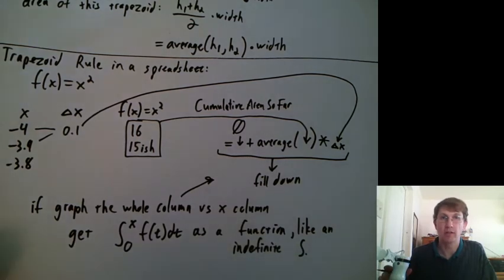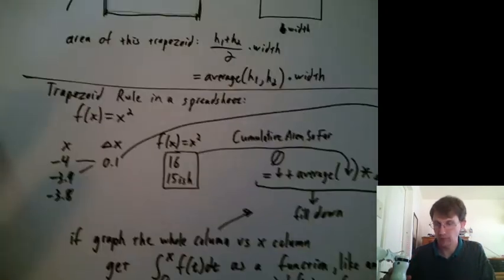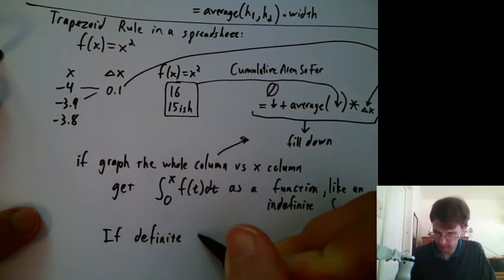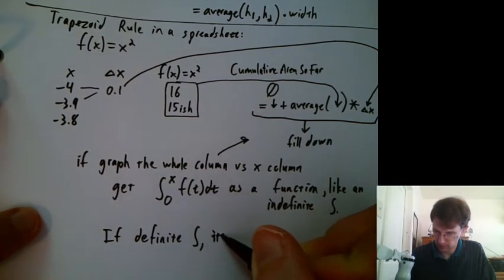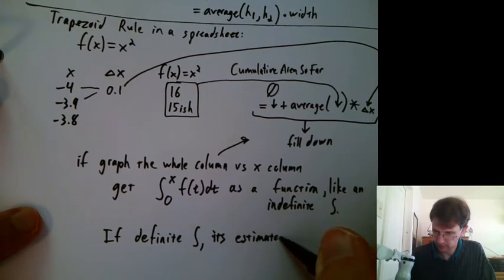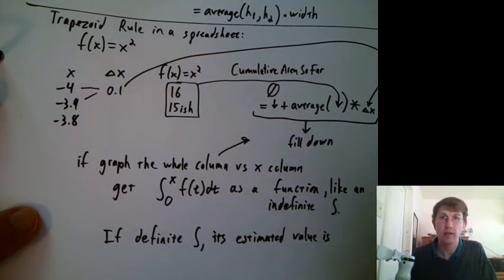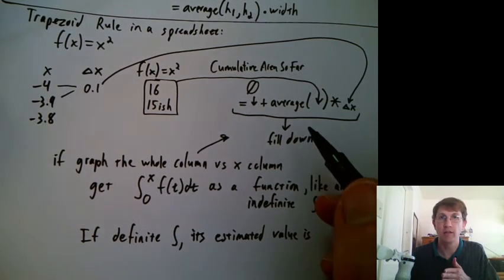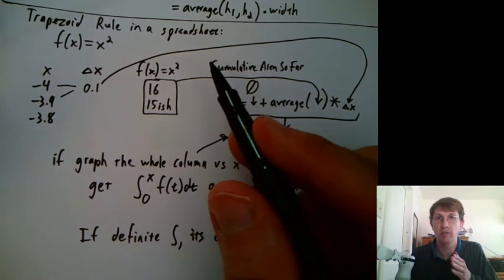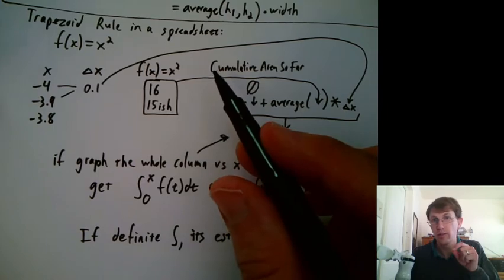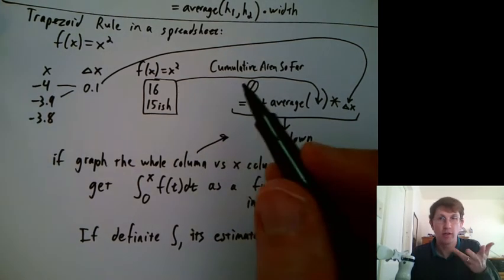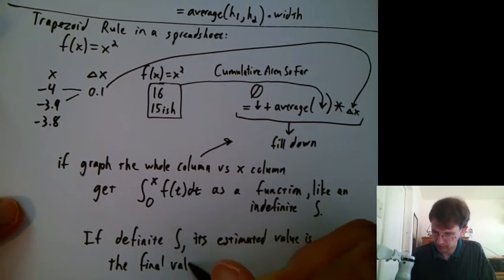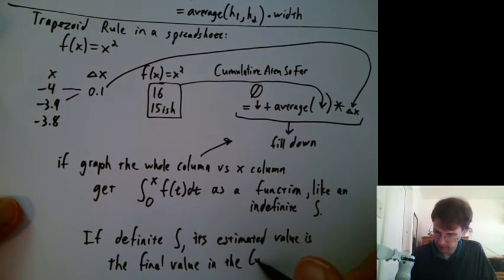If you have a definite integral, like the integral from negative 4 to positive 2 or something, its estimated value is the last answer in the cumulative area so far column. It's not the sum of that entire column. And in previous setups for spreadsheets, we had a column of individual box sizes, and we said you could sum all those up at the end. Here we don't even have that. We could say it's the final value in the cumulative area so far.